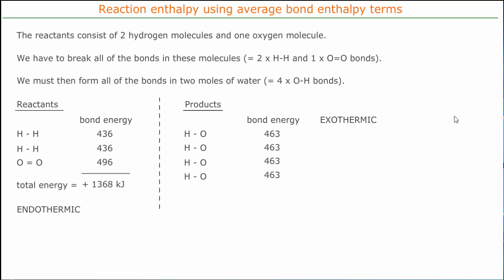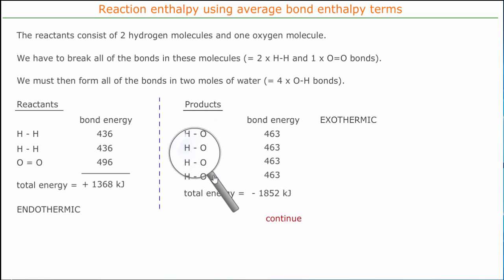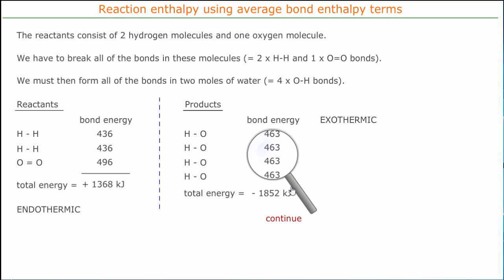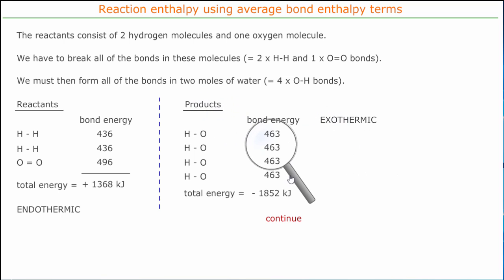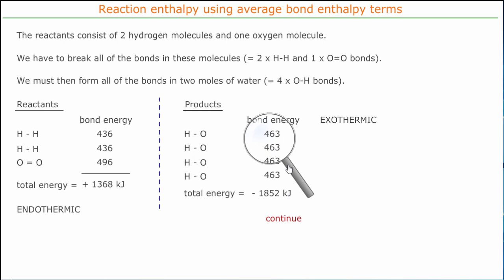Now we're making the bonds in the products. We have to make four O-H bonds because there are two moles of water. Each one releases 463 kJ per mole of bonds — it's an exothermic process because we're making the bonds. So our total energy released from making bonds is 1852 kJ.